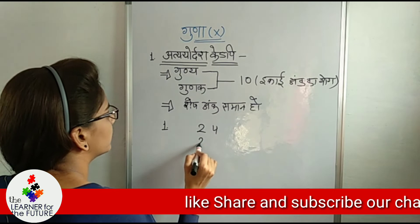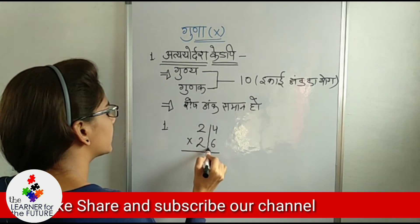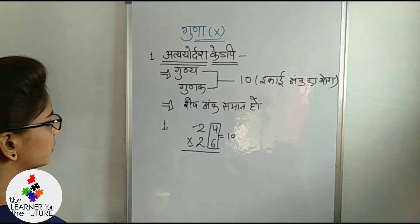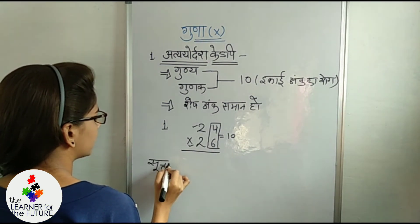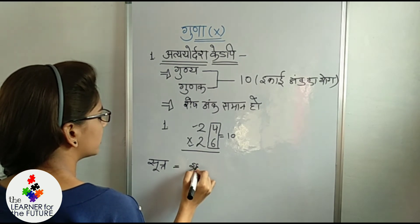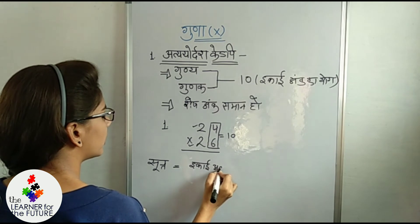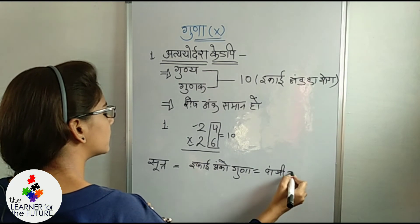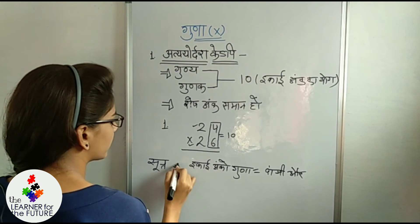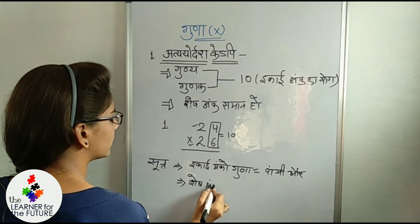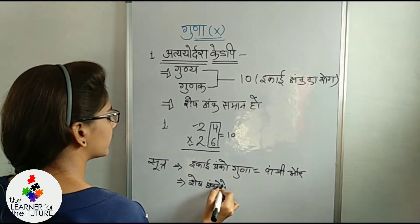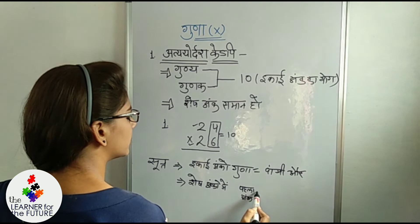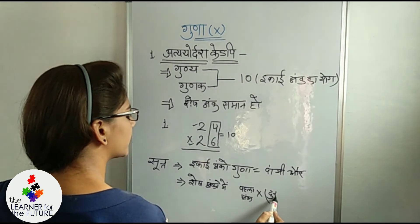Let's take example number one: 24 multiplied by 26. Here the unit digits are 4 and 6, and their sum is ten. We write the product of the unit digits on the right side, and for the remaining digits, we take the first digit multiplied by one more than the second digit.